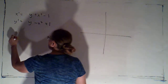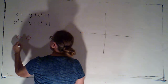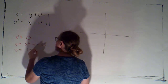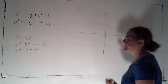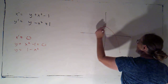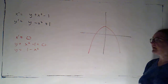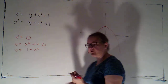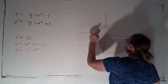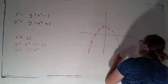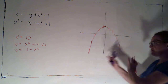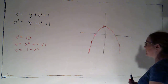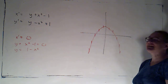Starting with the x-nullcline, that's where x' = 0, which means y + x² - 1 = 0, so y = 1 - x². That's a downward-opening parabola. Since x' = 0 there, we're not moving left or right at all, so we have vertical tangent lines anywhere along that nullcline. Once we find the y-nullcline, we can determine when those vertical arrows point up versus down.